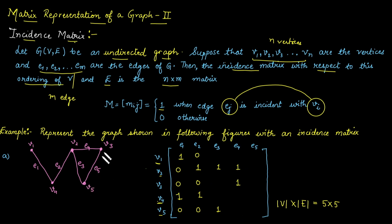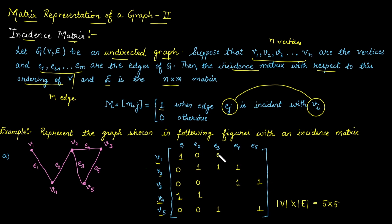E5 edge is associated with v3 and v5. V3 means the third row and v5 means the fifth row, so the corresponding entries in rows 3 and 5 are 1 and the others are 0. This is the incidence matrix for graph A.